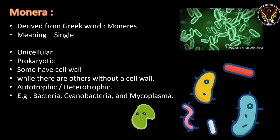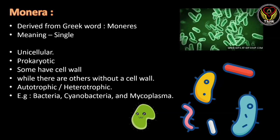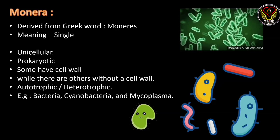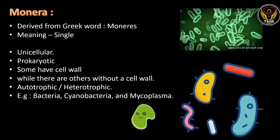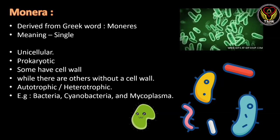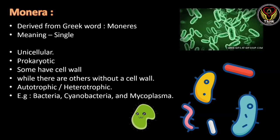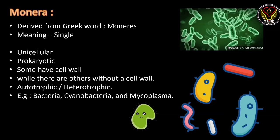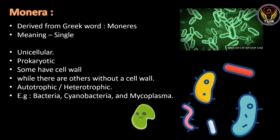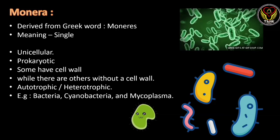The first kingdom is Monera. It is derived from the Greek word 'moneres' which means single. The cell type is unicellular prokaryotic, which means it is primitive. Some cells have cell wall but most lack cell wall. The mode of nutrition is autotrophic or heterotrophic, which means they can produce their own food or depend on other organisms. The best examples are bacteria, cyanobacteria and mycoplasma.